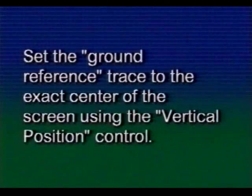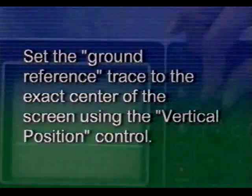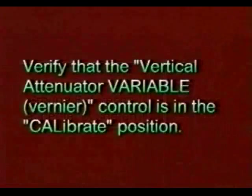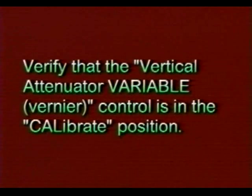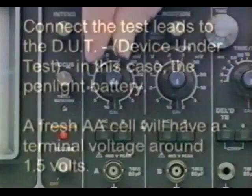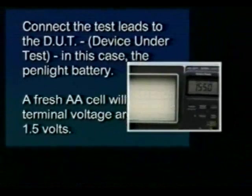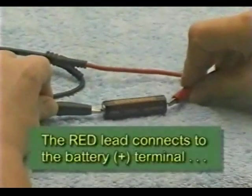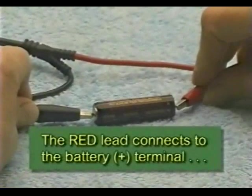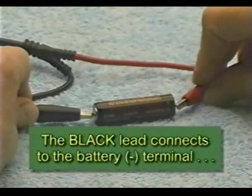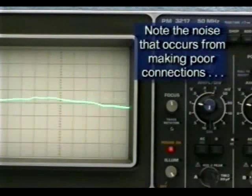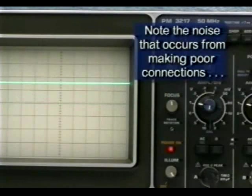Set the ground reference trace to the exact center of the screen using the vertical position control. Verify that the vertical attenuator variable vernier control is in the calibrate position. Connect the test leads to the device under test — in this case, the penlight battery. The red test lead is connected to the battery's positive terminal, and the black test lead is connected to the battery's negative terminal.